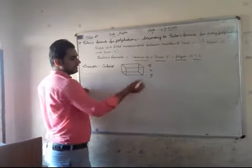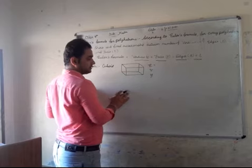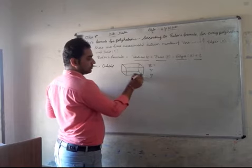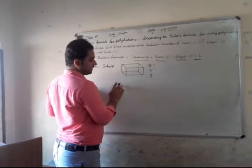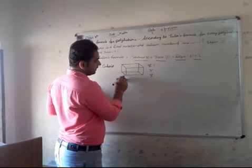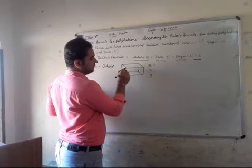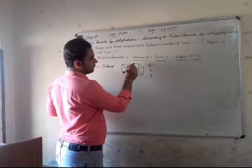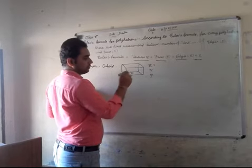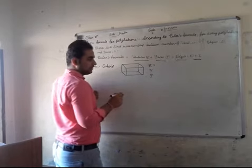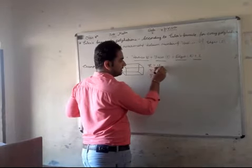First of all, you can see the edges of the cube. Let's count them: one, two, three, four, five, six, seven, eight, nine, ten, eleven, twelve. The cube has twelve edges.